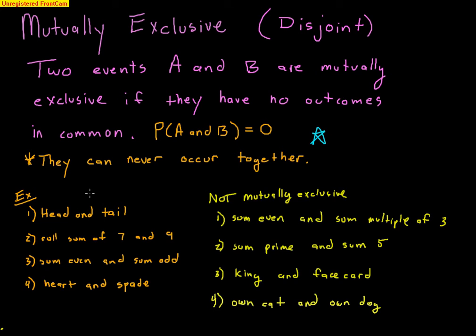Here are some examples of mutually exclusive events. Head and tail: there's no way you'll ever get a head and a tail at the same time — the probability is zero. Rolling two dice: a sum of 7 and a sum of 9 cannot both happen on the same roll — impossible, probability zero. Sum even and sum odd: you can never roll a sum that is both even and odd at the same time. With cards: getting a heart and a spade at the same time is impossible — no one card is both a heart and a spade.